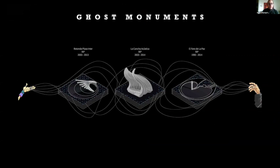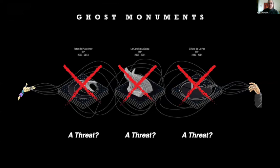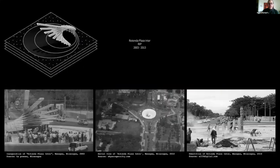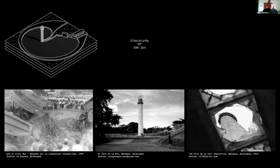By 2014, three of the most important monuments in Managua, capital of Nicaragua, were demolished by the Ortega-Murillo regime. La Concha Acústica, El Faro de la Paz, and La Rotonda Plaza Inter were turned to rubble in about a week. Seven years later, the essence of these monuments remains, occupied by different bodies but embedded in a parallel time as ghost memories that refuse to be forgotten. Rotonda Plaza Inter, designed by architect Glenn Small, was replaced by the Hugo Chávez altar. El Faro de la Paz, commemorating Ortega's first defeat in the 1990s and end of the Civil War — where all weapons were fused into its foundations — is now a recreation pool.